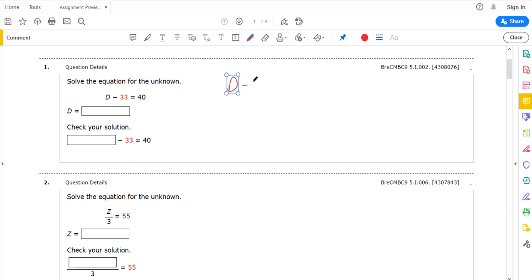So for question one, we're asked to solve for the unknown. Basically your goal is to get the letter D by itself here. If you get D by itself, then you found out some quantity that was missing.